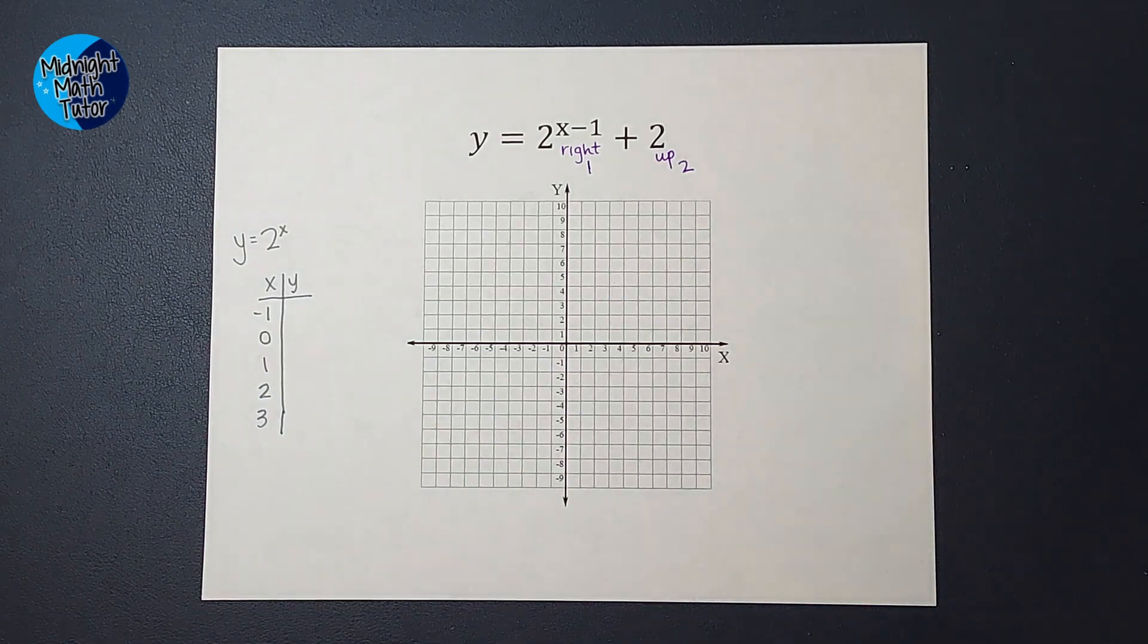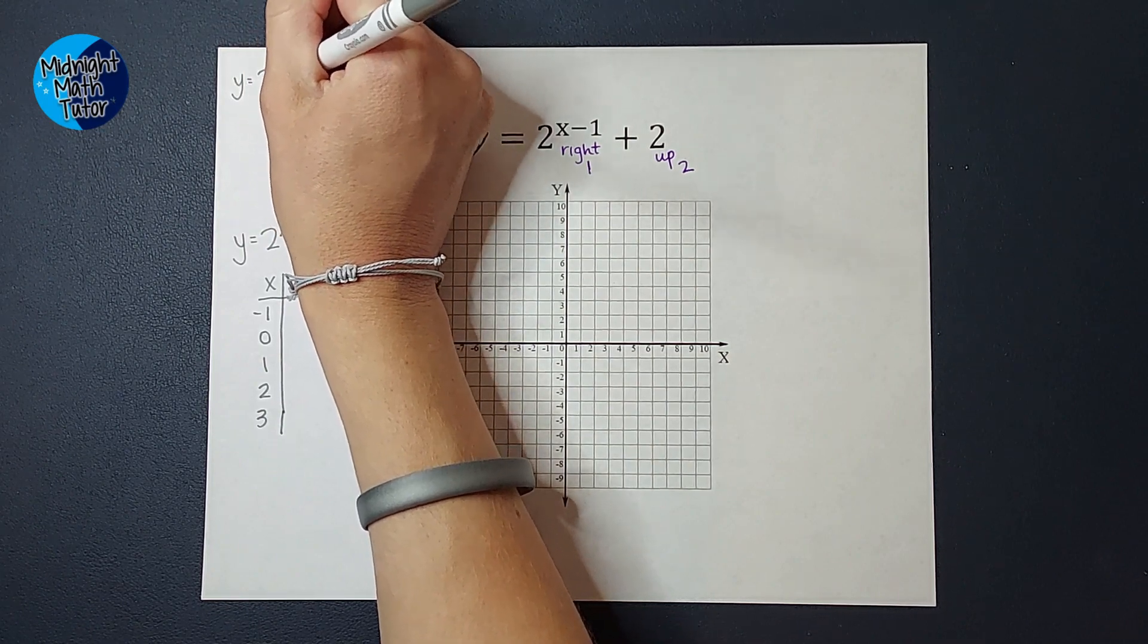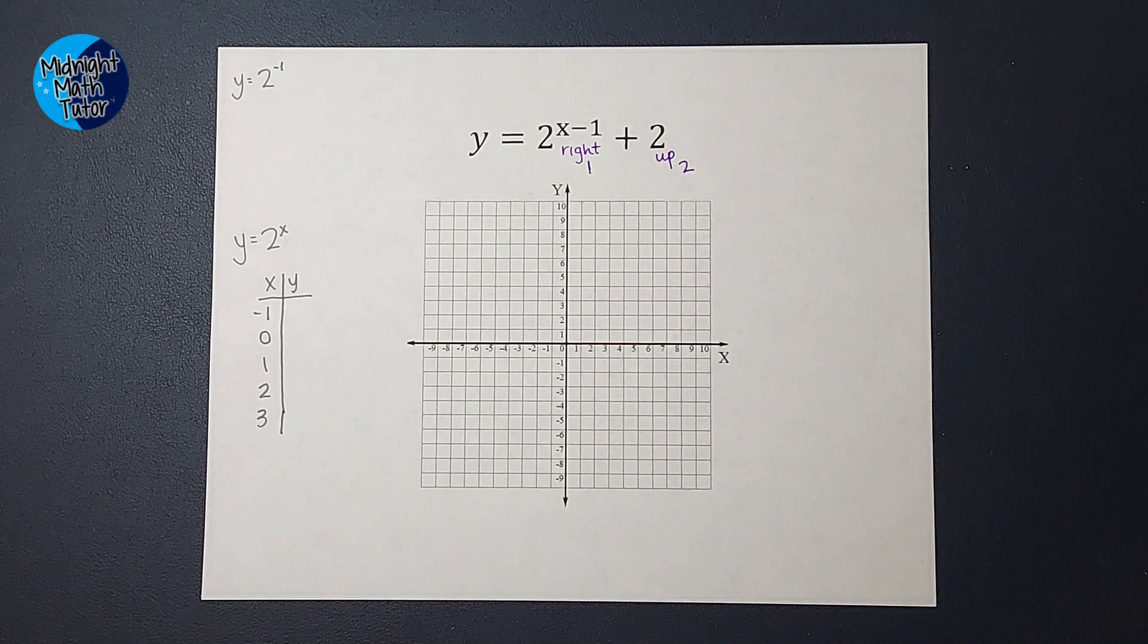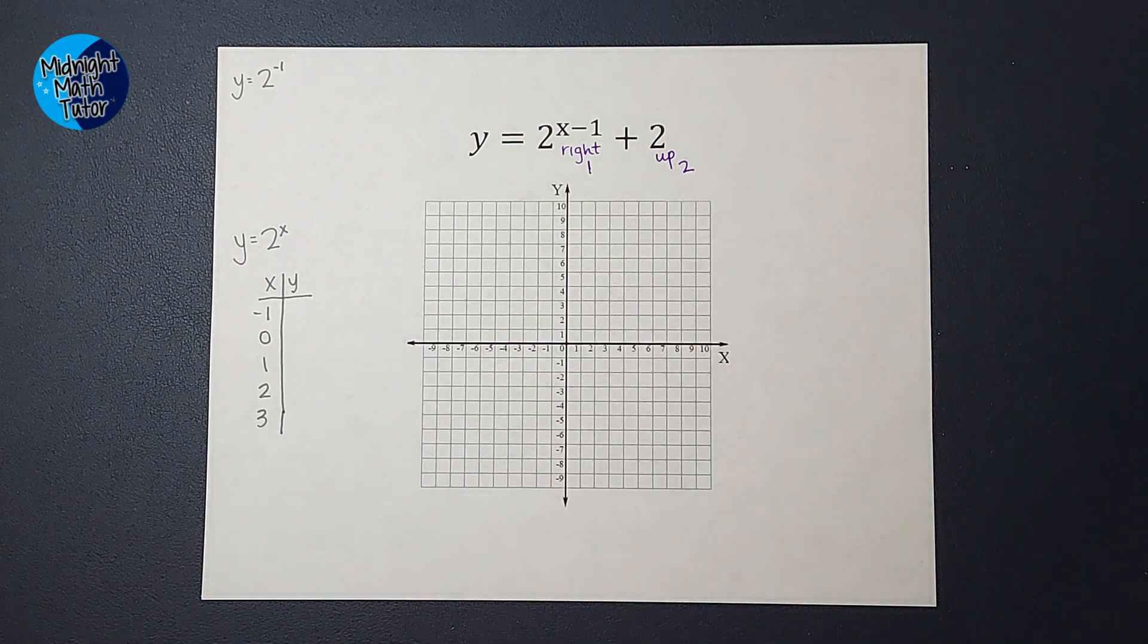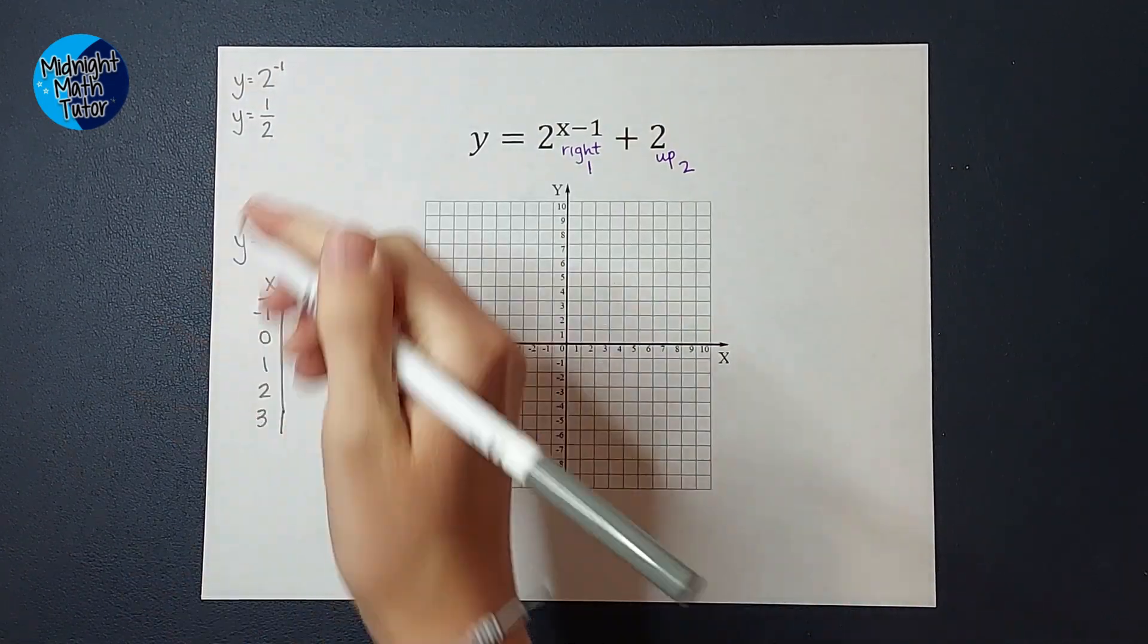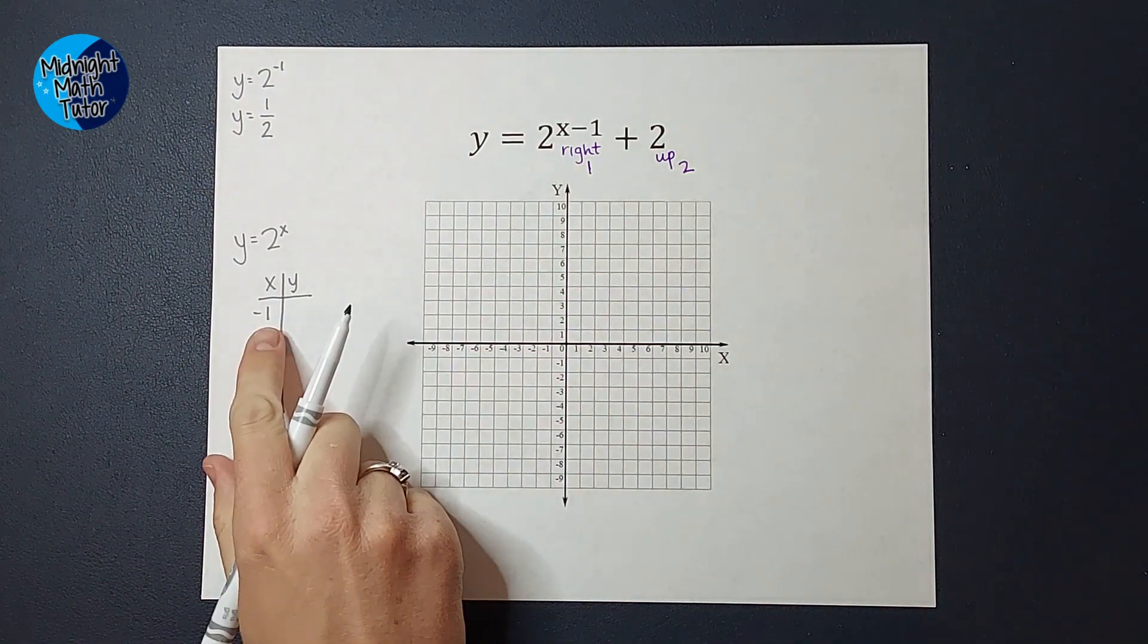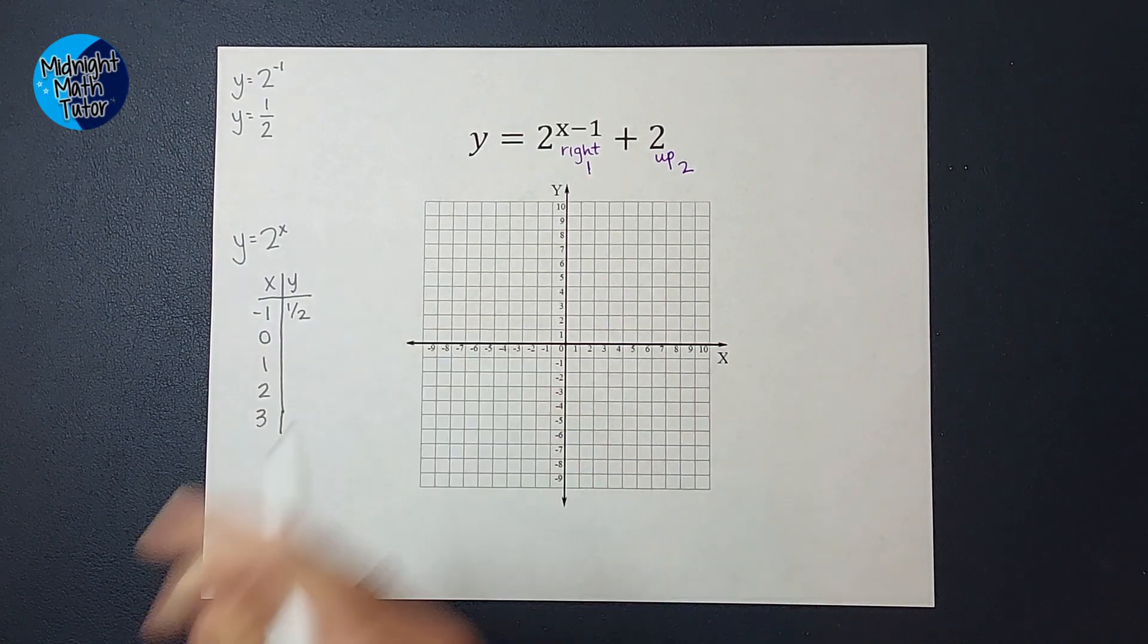So when I plug in negative 1 for x, I get y equals 2 to the power of negative 1. Now when I have a negative exponent, I'm going to put it to the denominator. If you're like, what is she talking about, I'll link a video in the corner where I show you why this works. So when I do that, I'm going to end up with y equals 1 half. That's technically 2 to the first power, but we don't really need to write that. So when I plugged in negative 1 for x, I got 1 half for y.